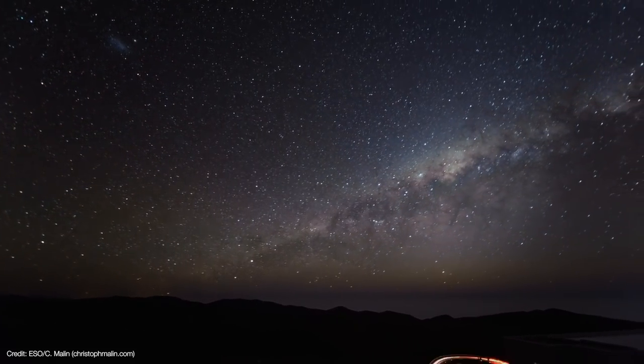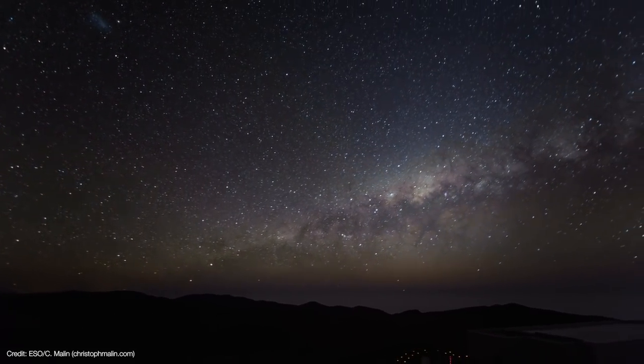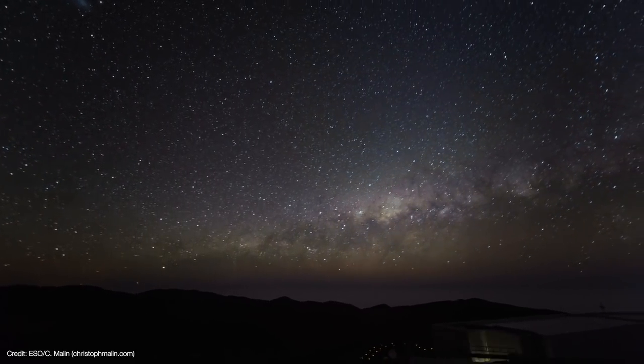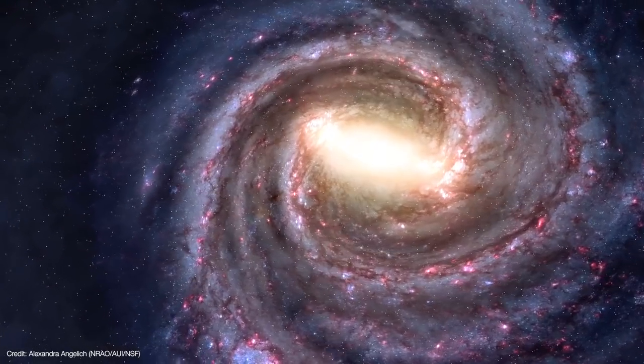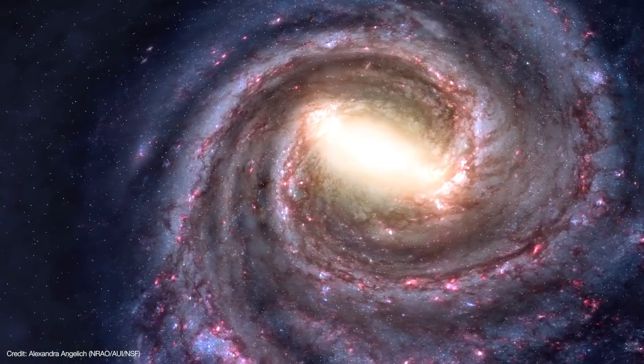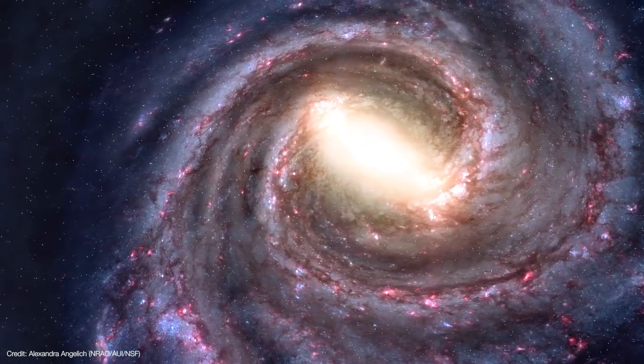Our understanding of the Milky Way galaxy has come a long way. What first looked like a dusty band of light in the sky turns out to be an enormous spiral galaxy that is home to 100 to 400 billion suns.